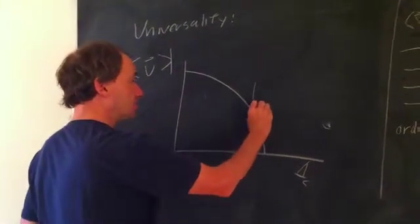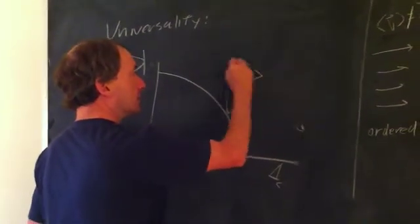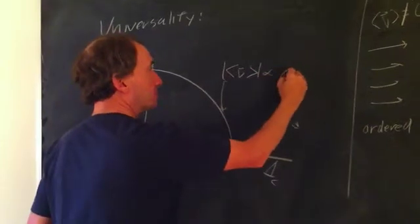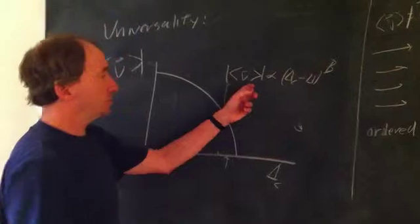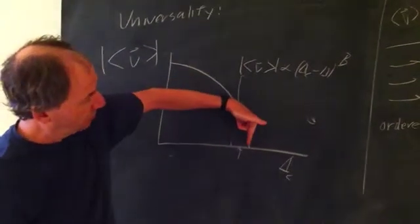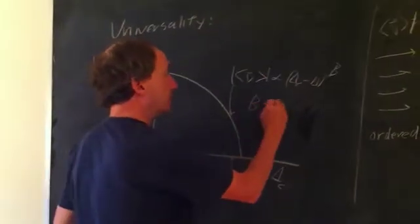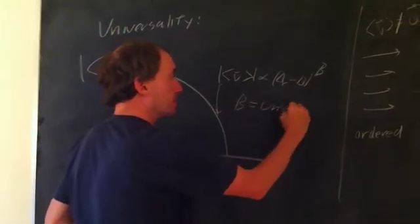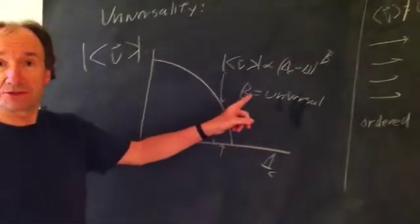In fact, the shape is given by a simple power law. The average velocity goes to zero like the distance from the point at which it vanishes to a power of beta, and this exponent beta is universal. That is, it's the same for all active fluids.